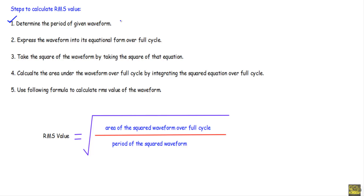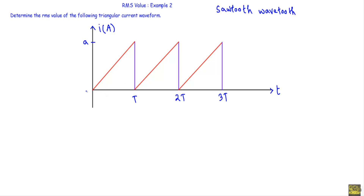In the first step I will determine the period of the given waveform. If you look at the triangular current waveform, you will see the waveform between the zero to T interval will be repeating in the upcoming cycles. Therefore the period of this waveform is equal to T.